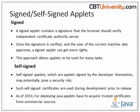Signed and self-signed applets: a signed applet contains a signature that the browser verifies through a remotely running independent certificate authority server. Producing the signature involves specialized tools and interaction with the authority server maintainers. Once a signature is verified and the user approves, a signed applet can get more rights, becoming equivalent to an ordinary standalone program — the author is known and responsible for any deliberate damage. Self-signed certificates are mostly used during the development phase. As of 2014, applets require a trusted certificate from commercial sources. Thanks for watching.